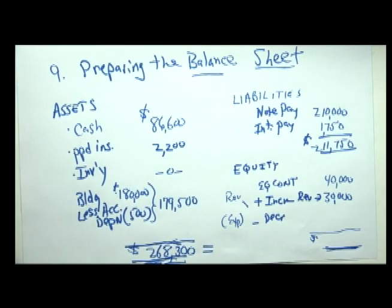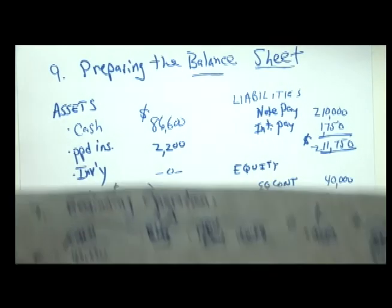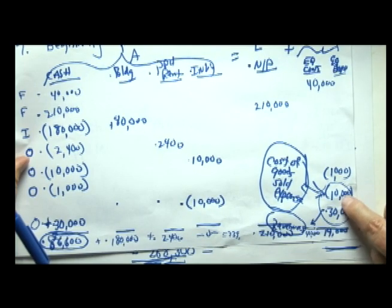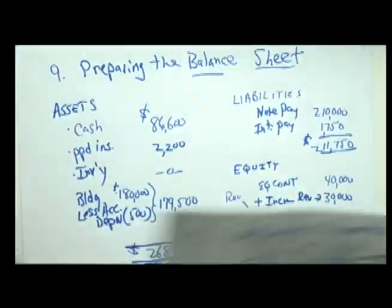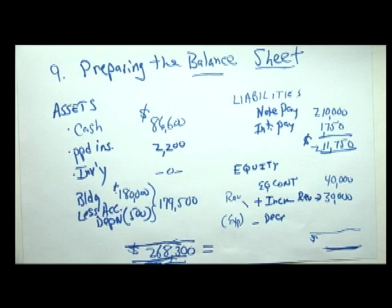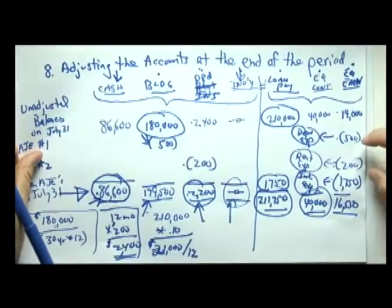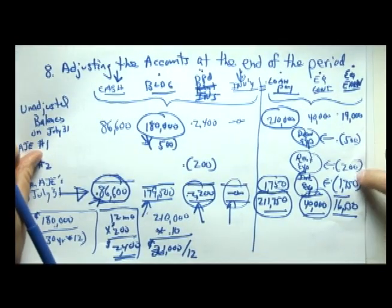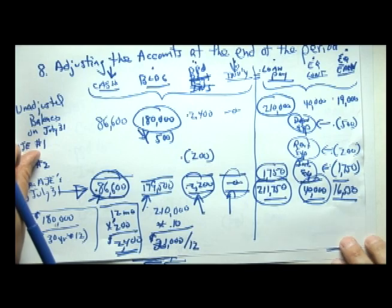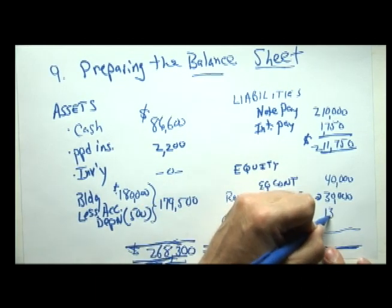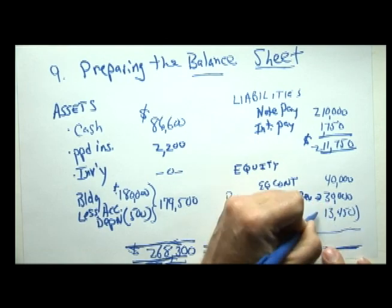For our expenses: we have one thousand for advertising and ten thousand for cost of bikes sold, that's eleven thousand. After our adjustments we had additional expenses of five hundred, two hundred, and seventeen fifty, which equals two thousand four hundred fifty in additional expenses. So our total expenses are thirteen thousand four hundred fifty.